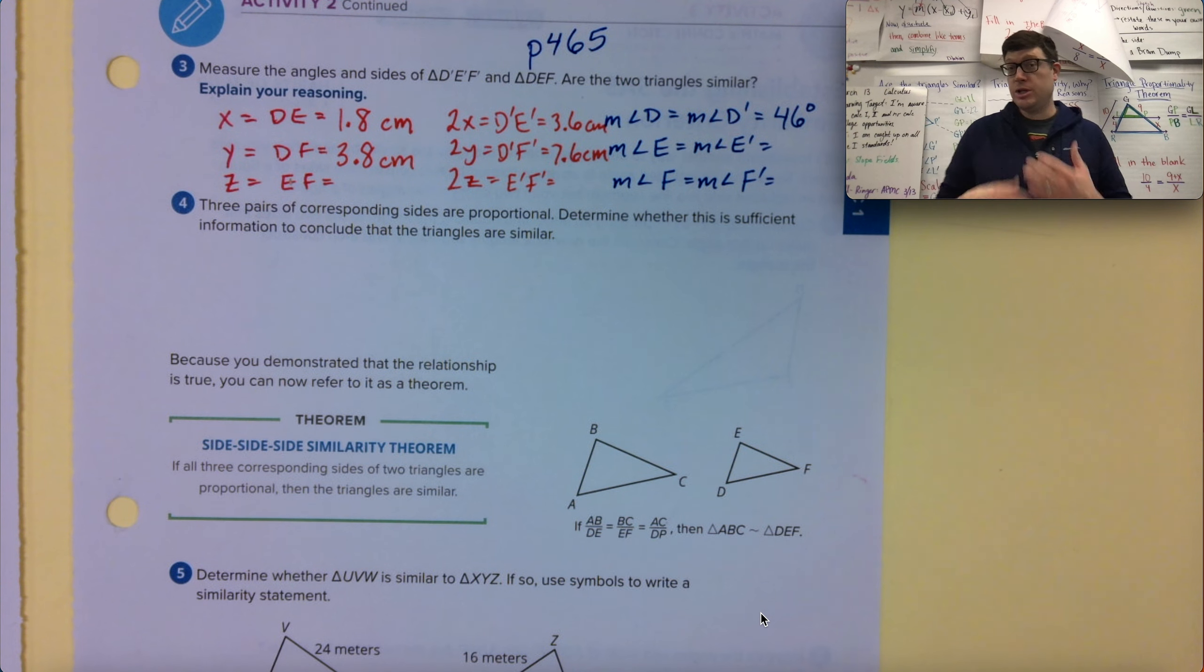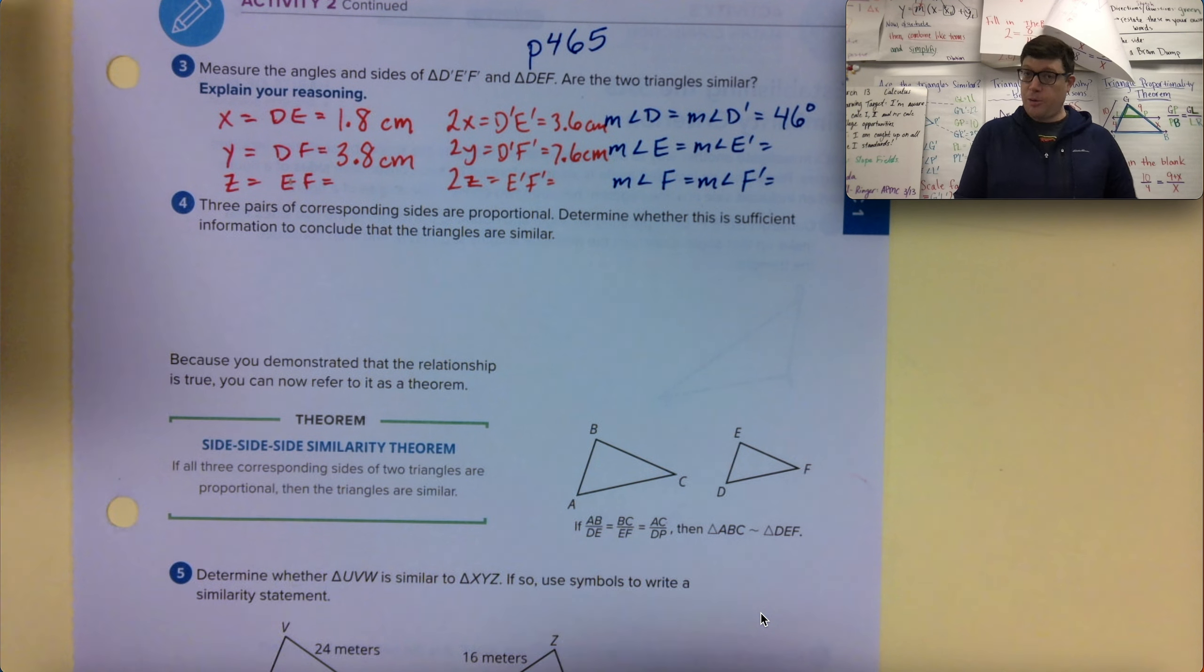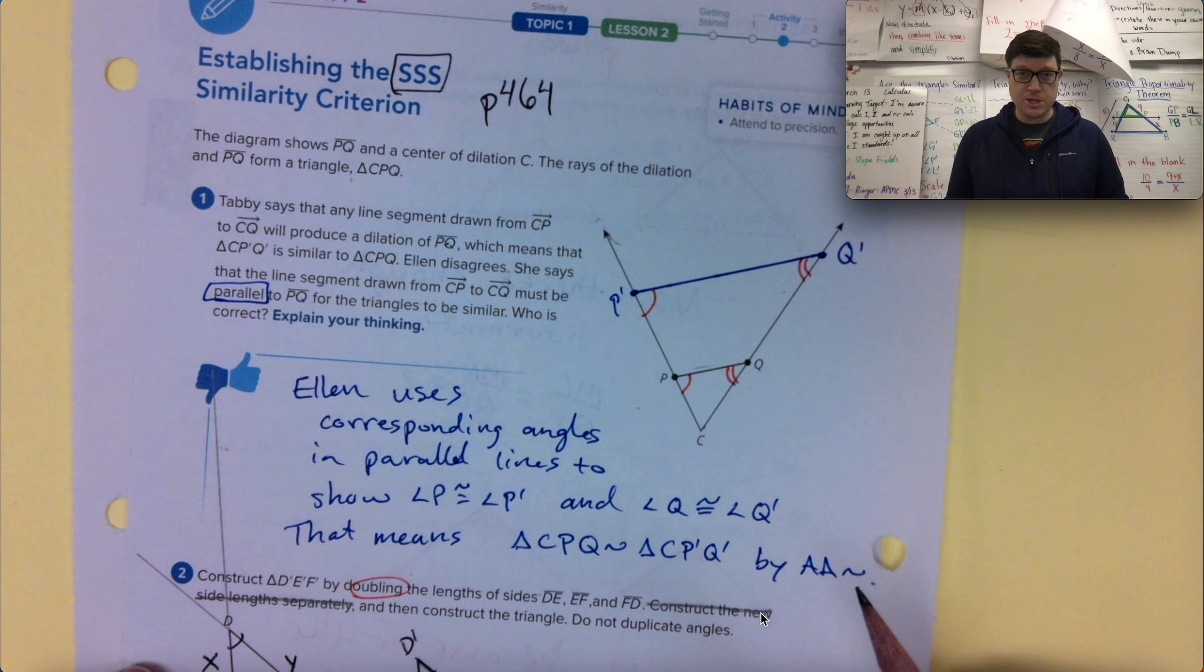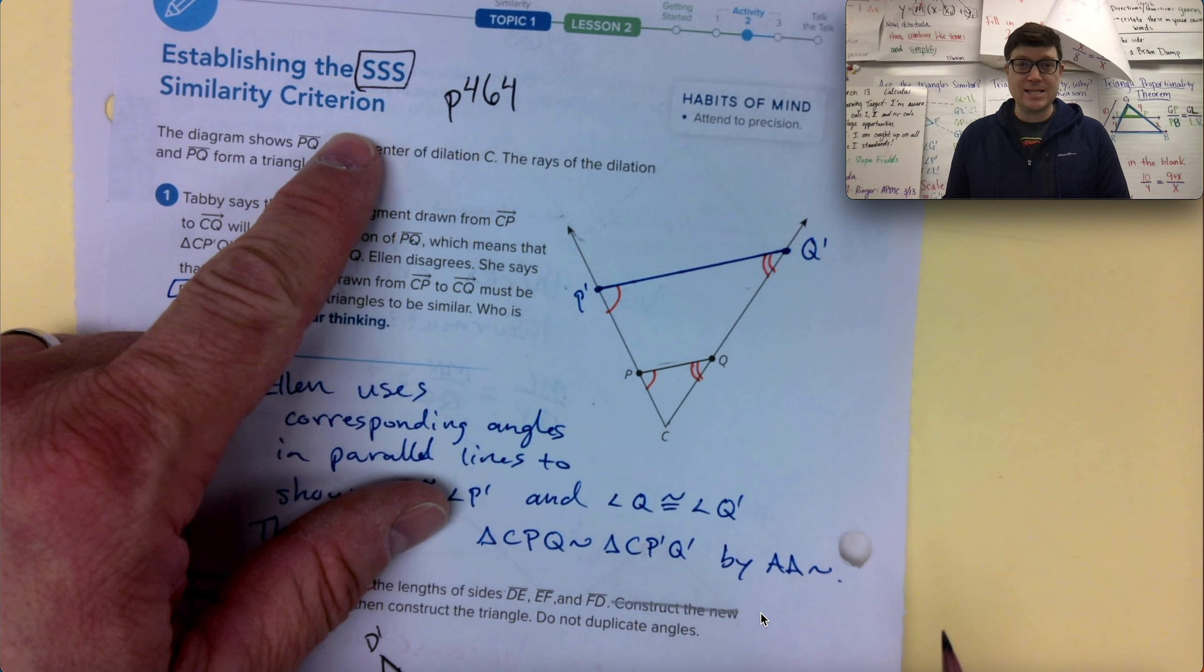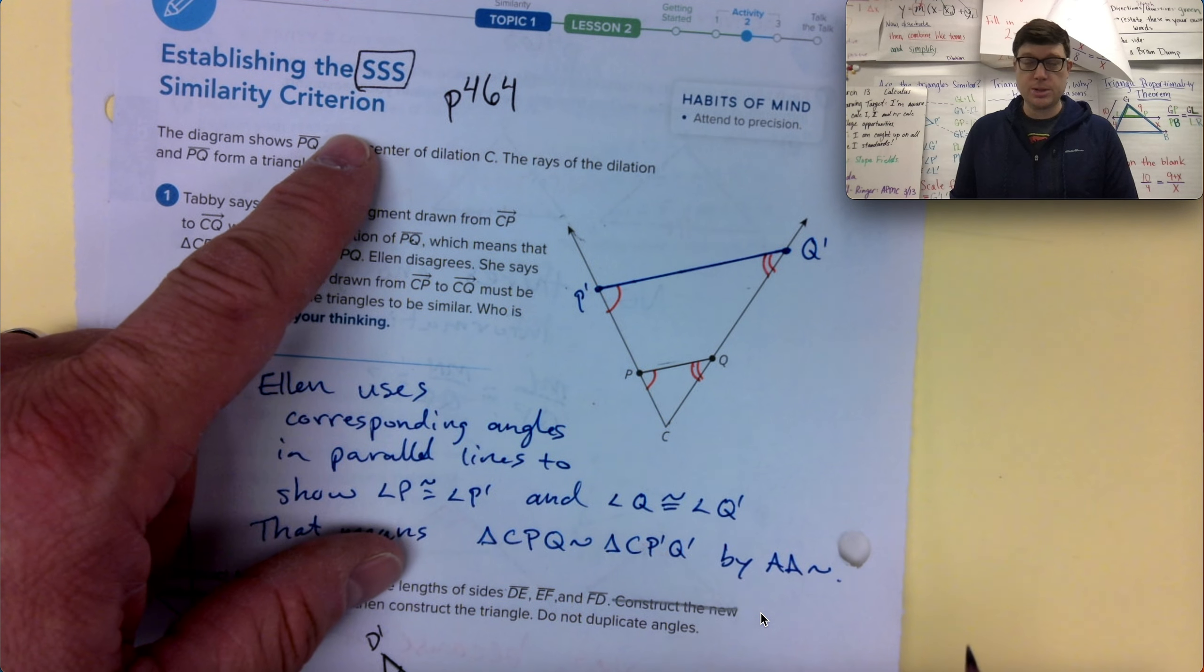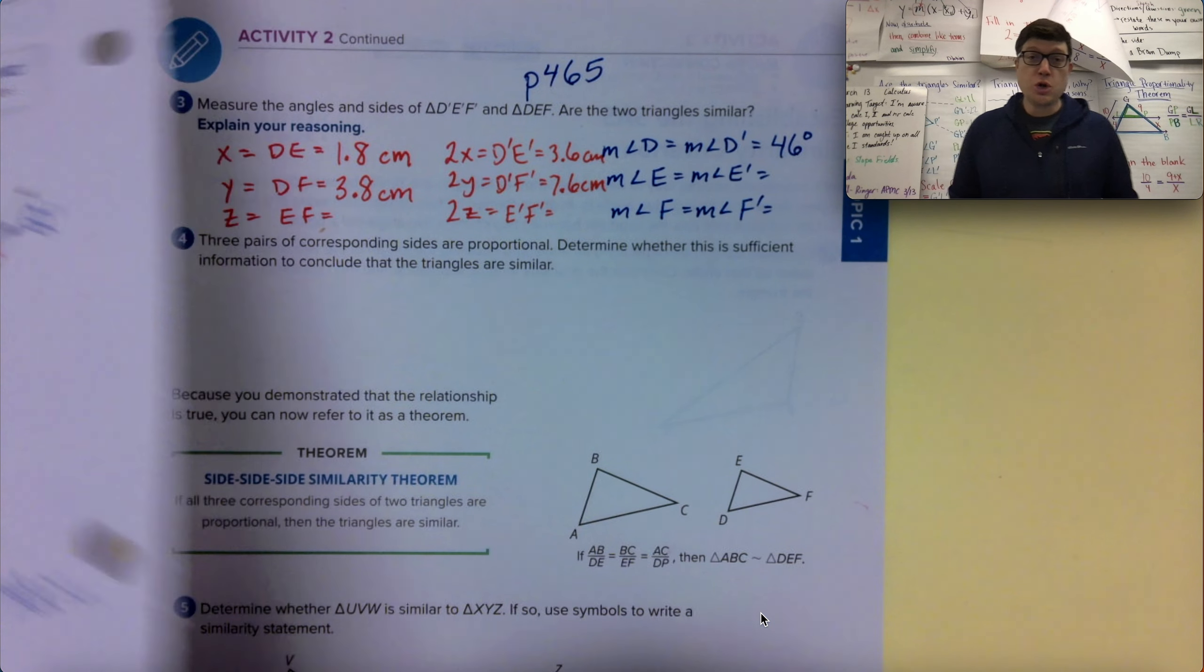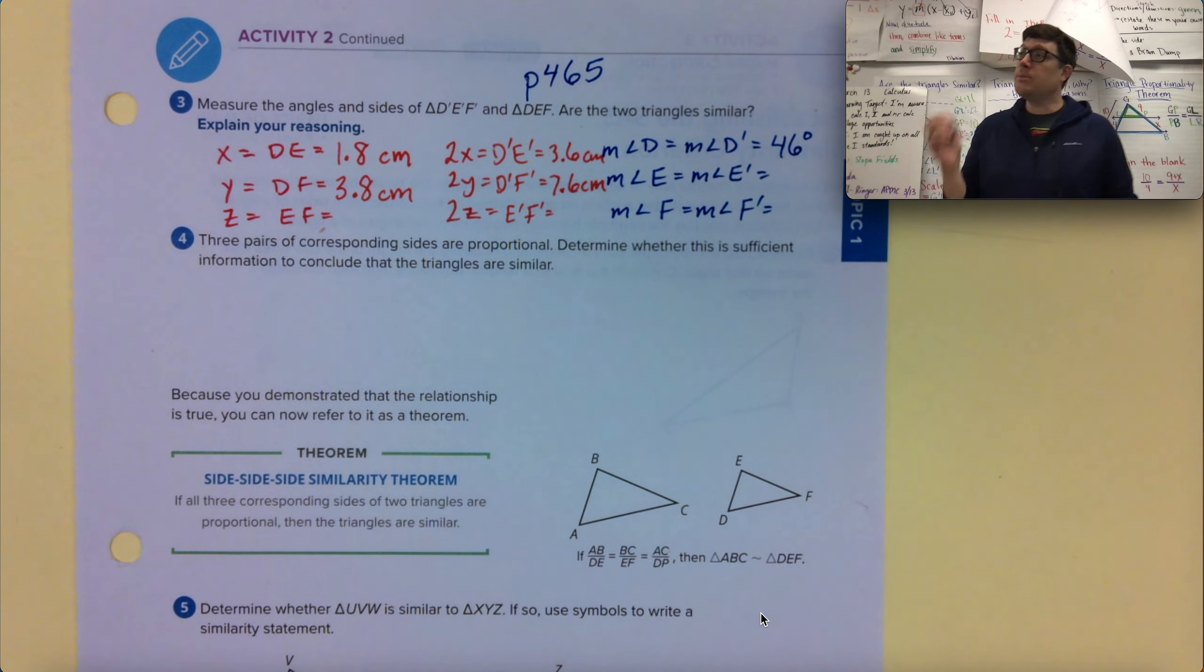We're talking about the conditions to show that two triangles are similar. We're in Activity 2, which in the previous video, previous page 464, maybe find it. We're talking about the side, side, side triangle congruence. No, I'm sorry, I keep saying congruence in these videos. Triangle similarity.